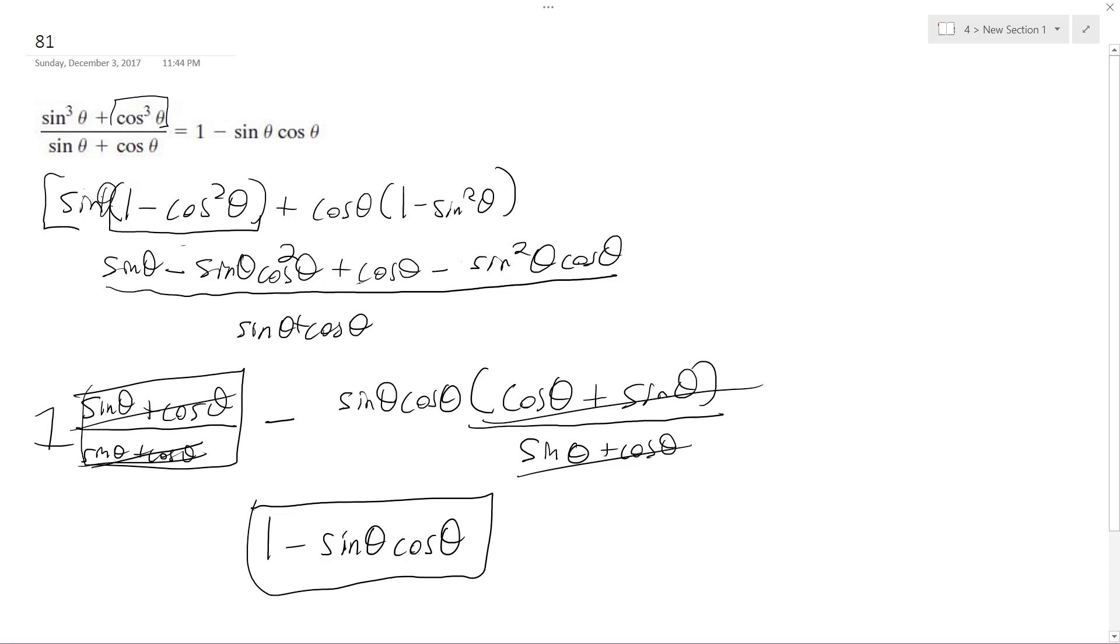And then what I did for sine theta cosine squared theta minus sine squared theta cosine theta is I factored out a negative sine theta cosine theta, and then I had cosine theta plus sine theta left, and that cancels out the denominator.